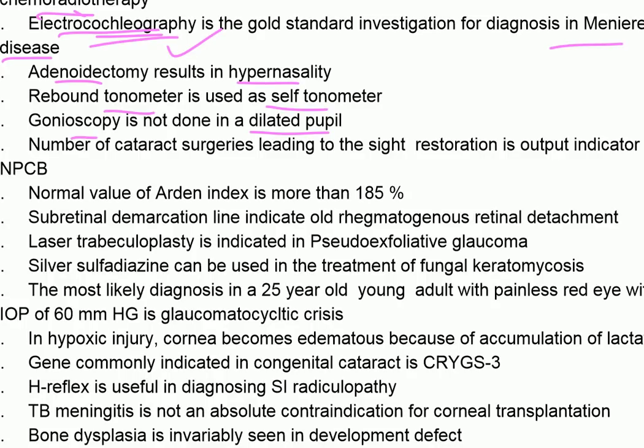Gonioscopy is used to test the internal drainage of the eye by examining the anterior chamber angle; it is not done in a dilated pupil.